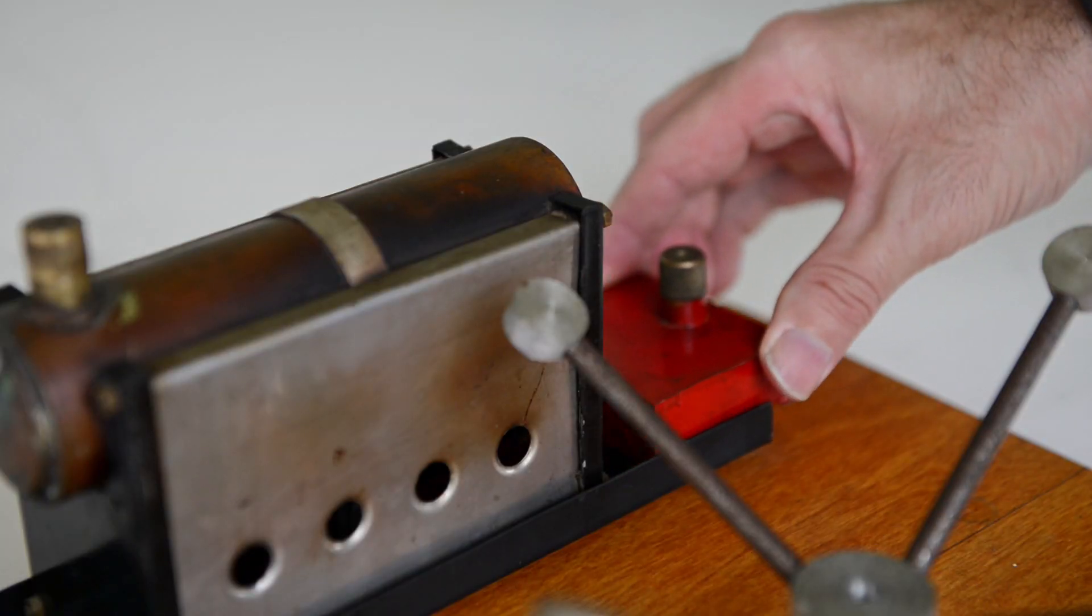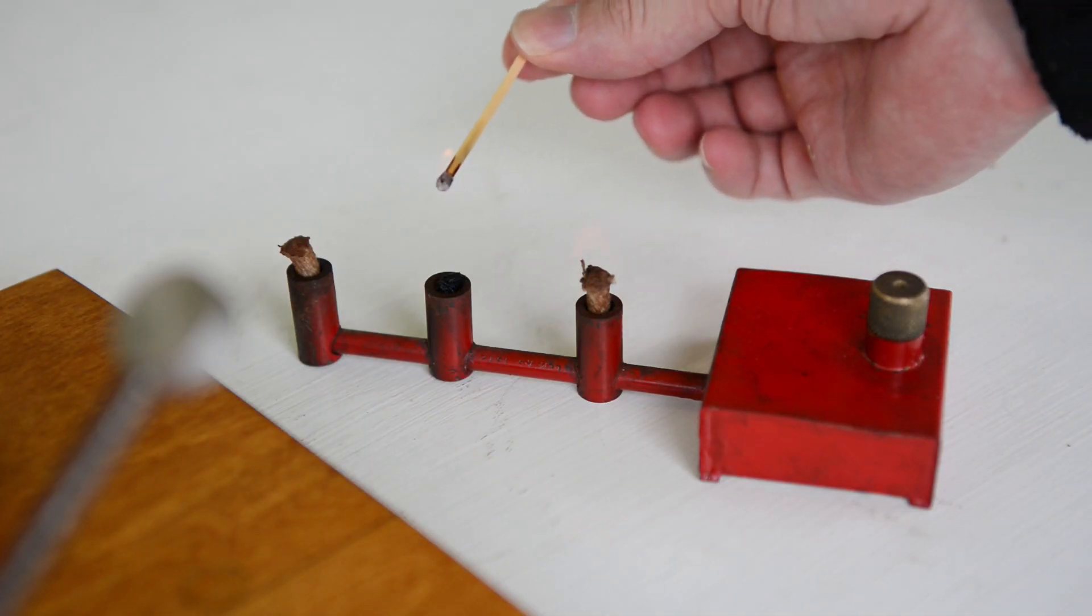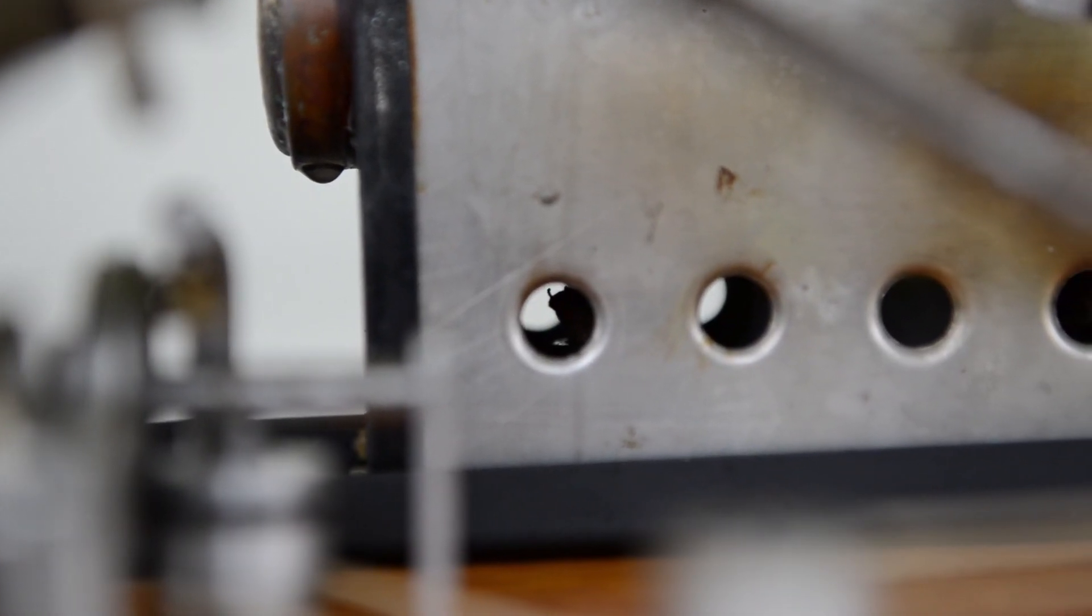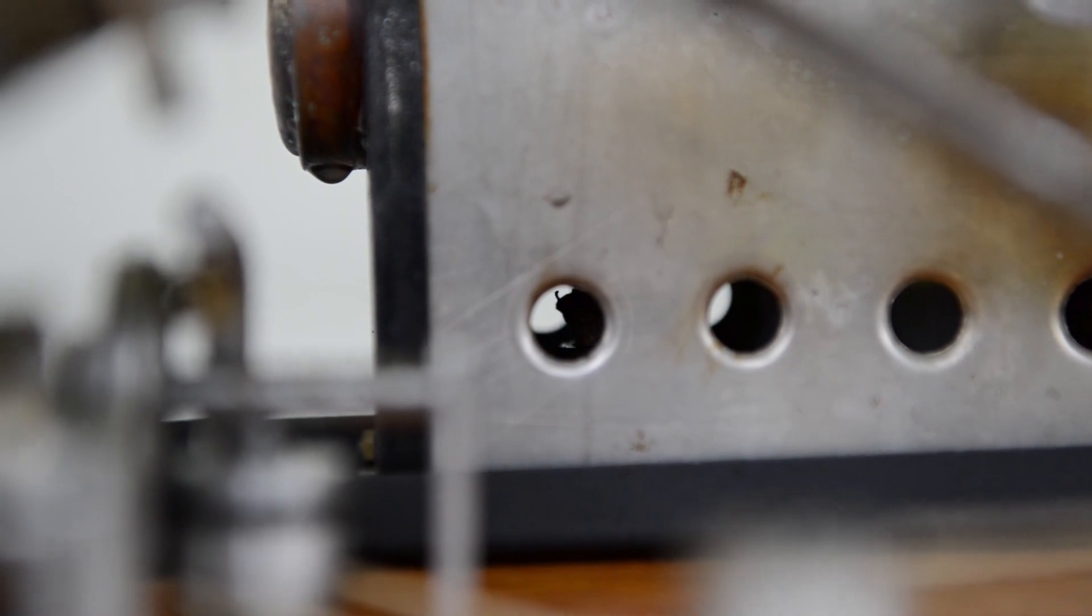Next I remove the burner again, light the wicks, and place it back under the boiler. I take a look here as I might be able to see the flames, but it's quite difficult to see them.